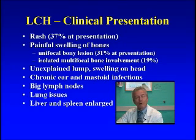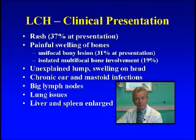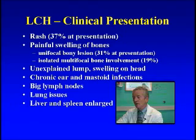If the liver and spleen are involved, the child's abdomen might be very swollen and they might be jaundiced — meaning the bilirubin is high, giving a yellowness to their skin or eyes. If the pituitary gland is involved, they might want to drink an enormous amount of water. We call this diabetes insipidus, or water diabetes, which is different from sugar diabetes. In this condition the pituitary gland isn't making the hormone needed to balance water and salt intake, so the child or adult wants to drink literally gallons of water a day.